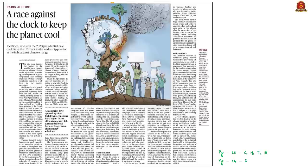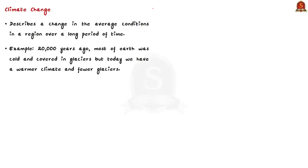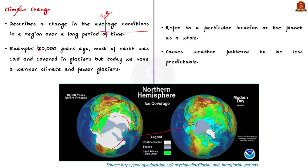Let us move on to the next news article, which is about the Paris Agreement — why the US withdrew from it and what new developments are expected once Joe Biden becomes the next president. Paris Agreement is related to climate change. Climate change describes a change in the average conditions such as temperature and rainfall in a region over a long period of time. For example, 20,000 years ago much of the Earth was cold and covered in glaciers, but today we have a warmer climate and fewer glaciers. Climate change may also cause weather patterns to be less predictable.